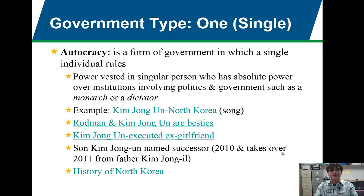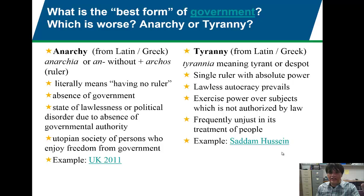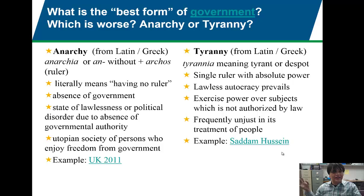Within singular forms of government, there's also tyranny, and there's also anarchy. Anarchy literally comes from the Latin and Greek roots: 'an,' meaning without, and 'arcos,' meaning ruler. It literally means having no ruler. In an anarchic system, you have no ruler, an absence of government, which is very rare. Within anarchy, you usually have a state of lawlessness because there's no one to enforce the rules or even tell you what the rules are, and you have political disorder due to the absence of governmental authority.